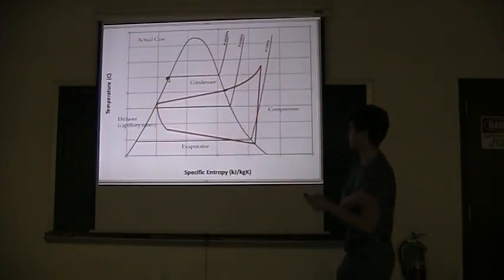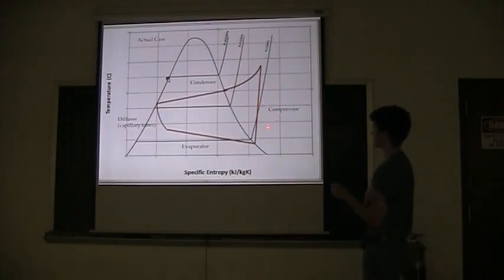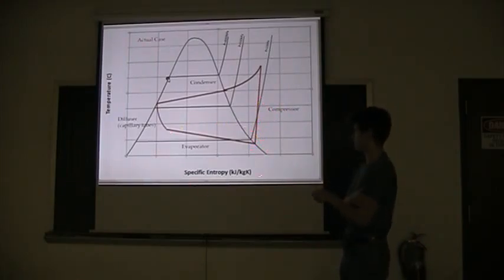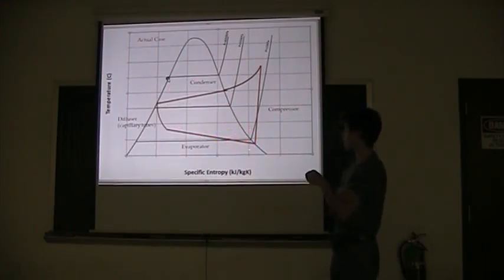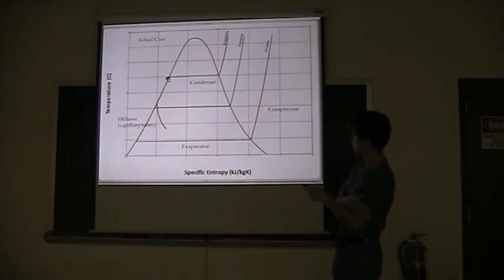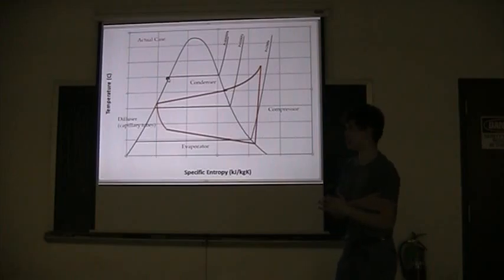So this is more like the actual case. In the compressor you're going to have some non-ideal behavior. It's going to increase your entropy. In the condenser you're going to lose some temperature which is not what you want to do. And the evaporator also you're going to lose some temperature. So all of these lines that weren't acting the right way are actually decreasing our coefficient of performance.